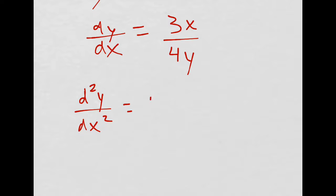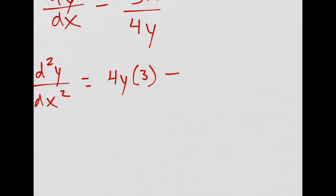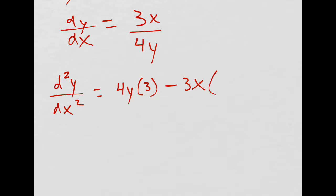That'll be low d high, so low d high, minus high, minus 3x, d low, that'll be 4 dy/dx, because the derivative of y is just 1, and then you tack on a dy/dx.